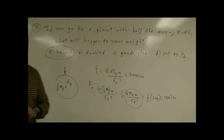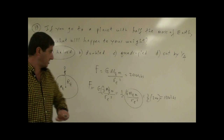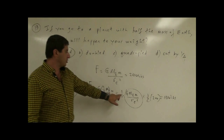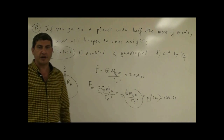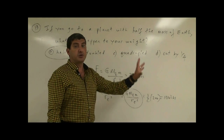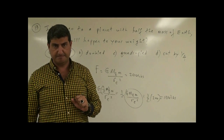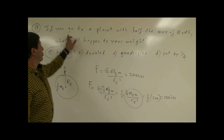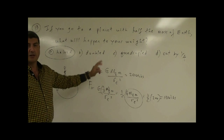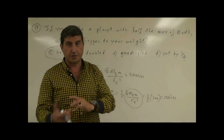What if you go to a planet with double the mass of the Earth but the same radius? Then the two comes out and your weight is two times whatever you weigh on Earth. So if you weigh 200 pounds on Earth, you will weigh 400 pounds on that other planet. If you go to a planet with double the mass, your weight will be doubled. Triple the mass — triple. One-third the mass — one-third.